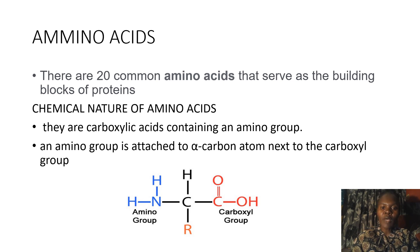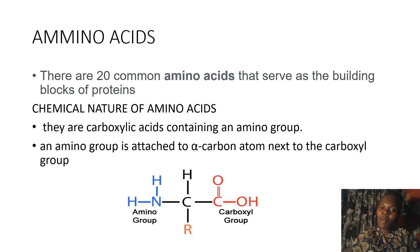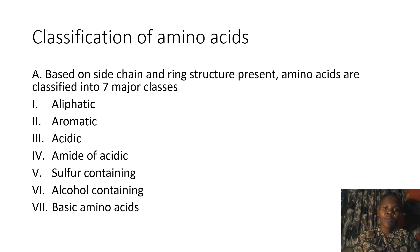Let us dive into the chemical nature of amino acids. Looking at the general structure, an amino acid has a carboxyl terminal — the COOH group — to the right-hand side, an amino group — NH2 or NH3+ — to the left-hand side, an alpha carbon (the central carbon), a hydrogen, and the R side chain. The R side chain is what gives amino acids their physical and chemical properties. They are carboxylic acids containing an amino group. The general structure is the same for all amino acids; the difference lies only in the R side chain.